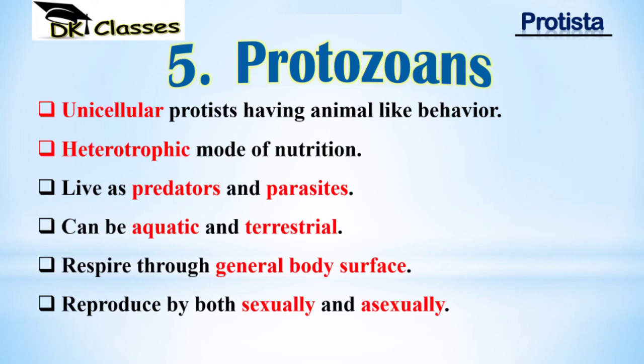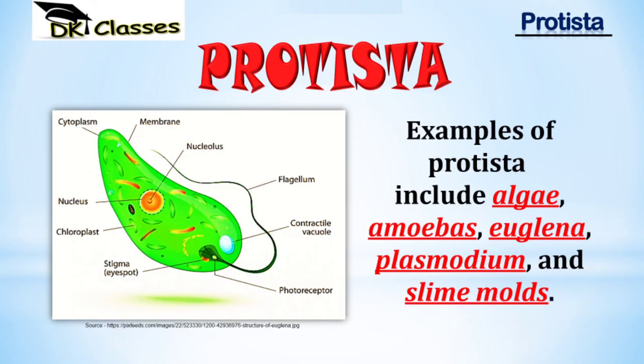Protozoans are a very big group with superclasses and classes, which will be discussed in detail in the next lecture (Lecture 5). After that, we will move on to Fungi, Plantae, and Animalia. Examples of Protista include various algae, Amoeba, Euglena, Plasmodium, and slime molds.